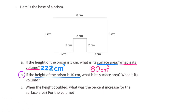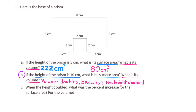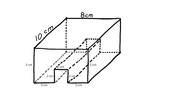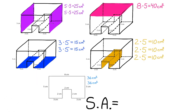Part B: If the height of the prism is 10 centimeters, what is its surface area? What is its volume? I know that the volume is going to double because the height doubled, so the volume would be 360 centimeters cubed. Now let's find the surface area. Let's take the information from the first problem and substitute the height with a 10. The base pictured at the bottom would remain unchanged, and remember, there are two bases — a top and a bottom.